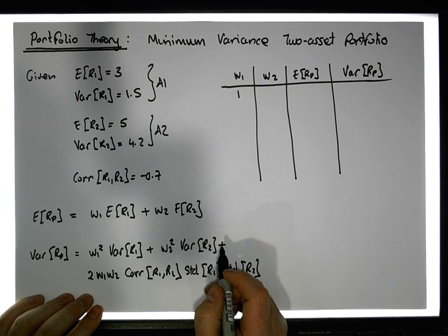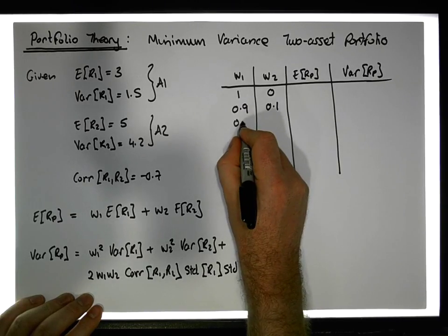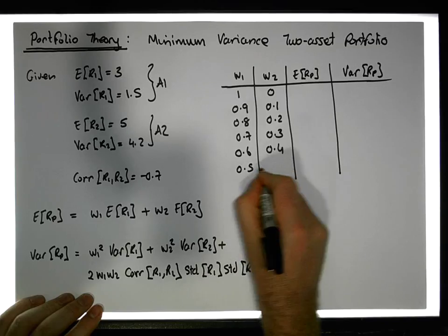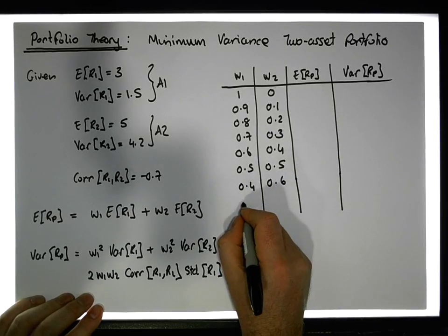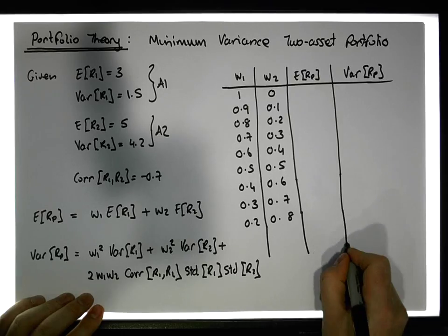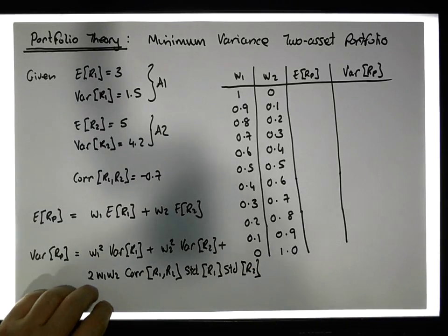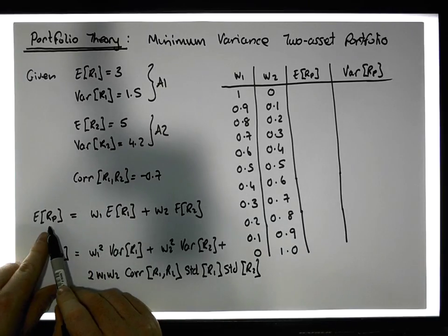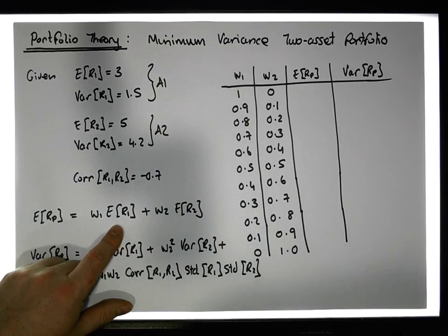We put 100% of asset one into the mix, which means zero of asset two. Then 90% asset one with 10% asset two, then 80/20, 70/30, 60/40, 50/50, 40/60, 30/70, 20/80, 10% asset one with 90% asset two, and finally 0% asset one with 100% asset two. We now need to calculate the expected return for the portfolio at each of these weight combinations — and I've actually calculated this already.